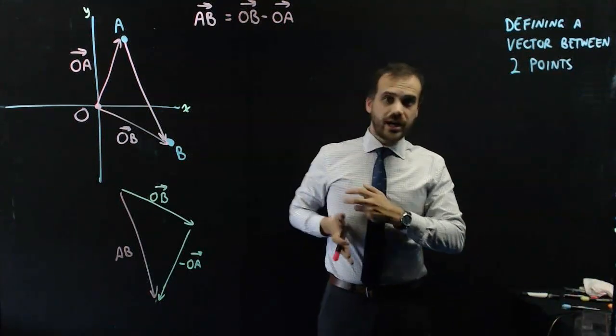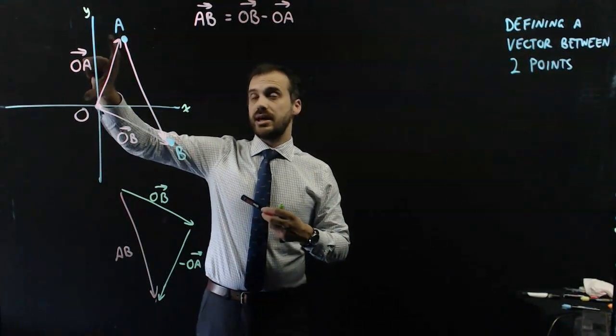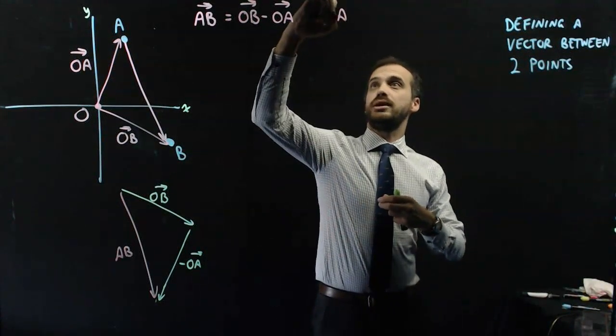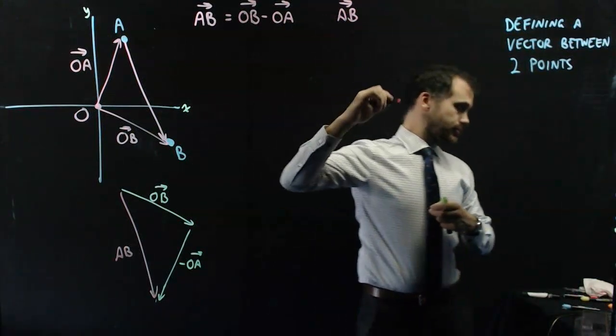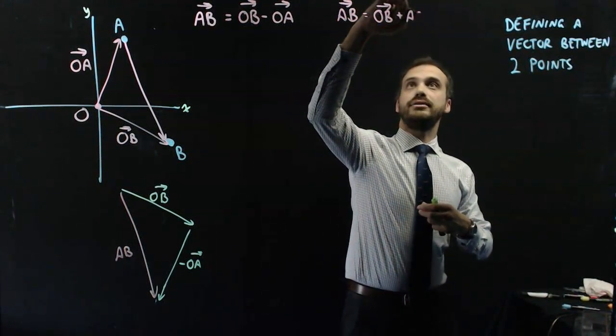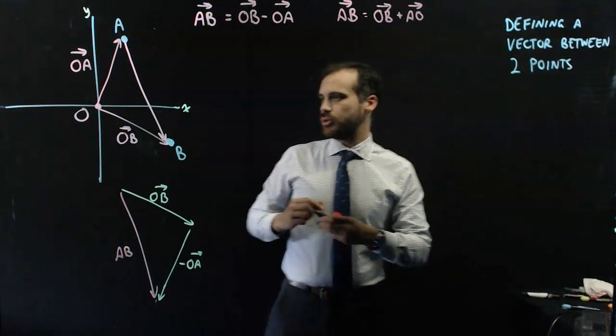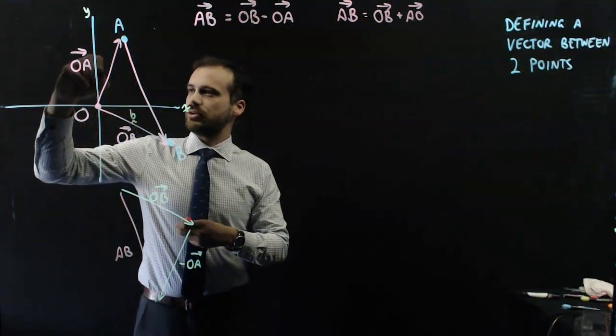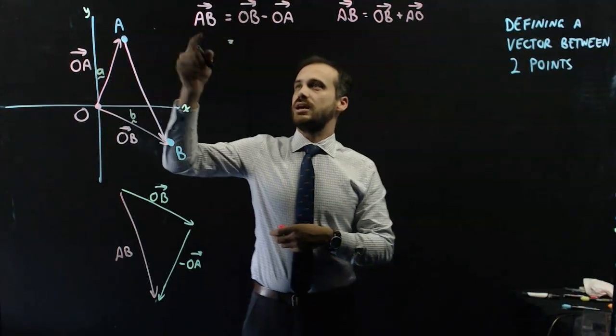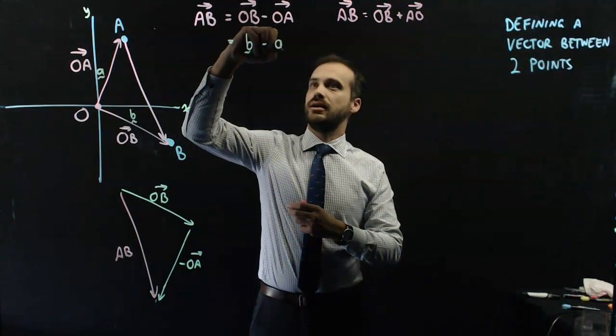Now, that's okay. It should be noted that negative OA is the same as AO. So an alternative way to write this would be AB equals OB plus AO. Okay, we can sort of simplify that down a little bit by calling this vector B and calling this vector A. It's the vector leading to point A. It's the vector leading to point B. So we can say vector AB is equal to B minus A.